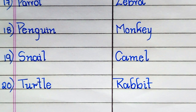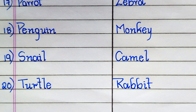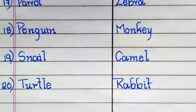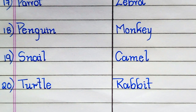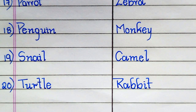The name of the 19th oviparous animal is Snail, 20th Turtle. The name of the 19th viviparous animal is Camel, 20th Rabbit.